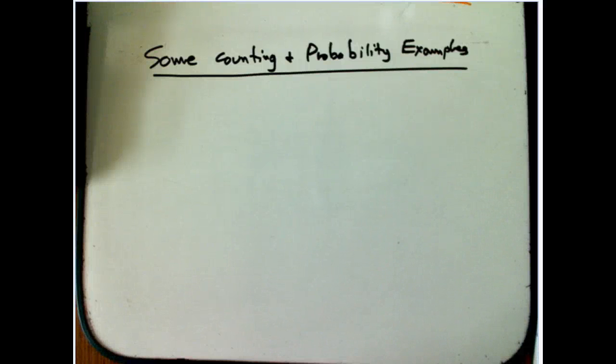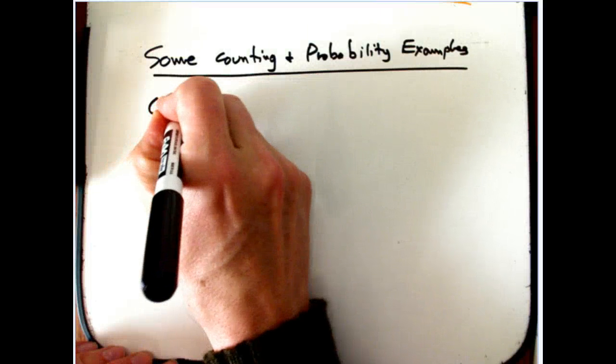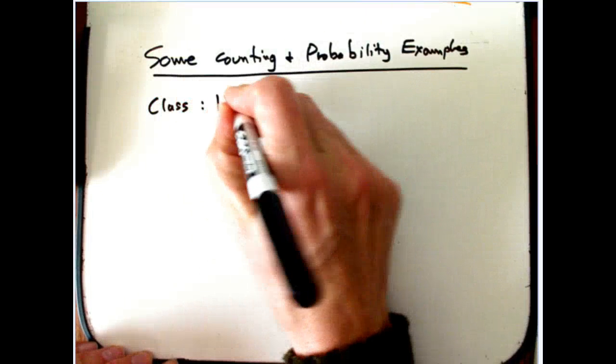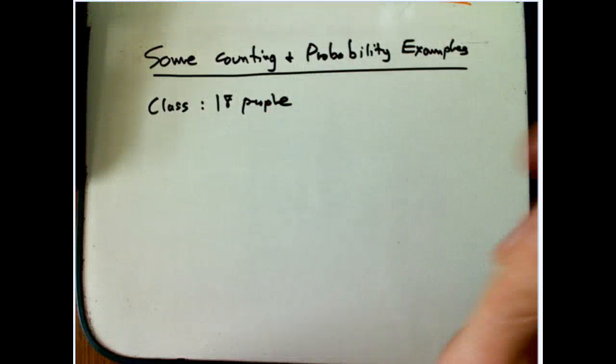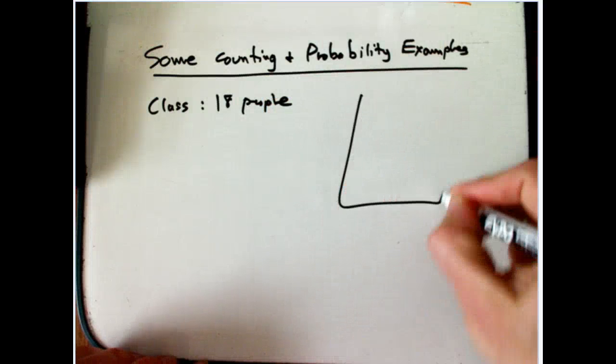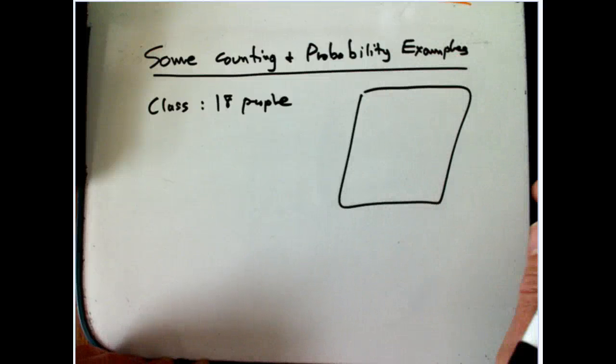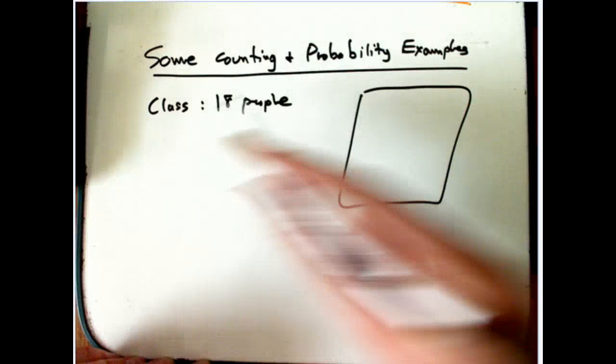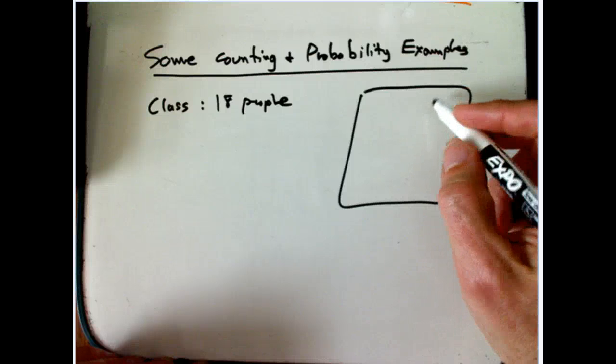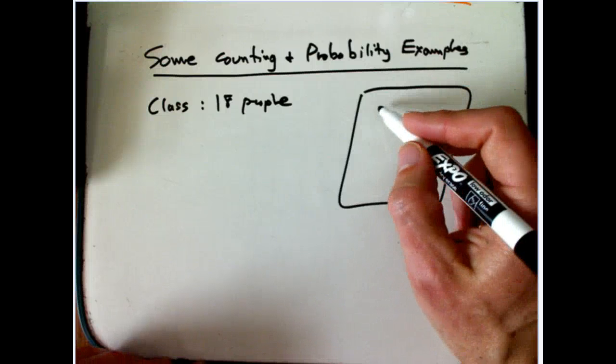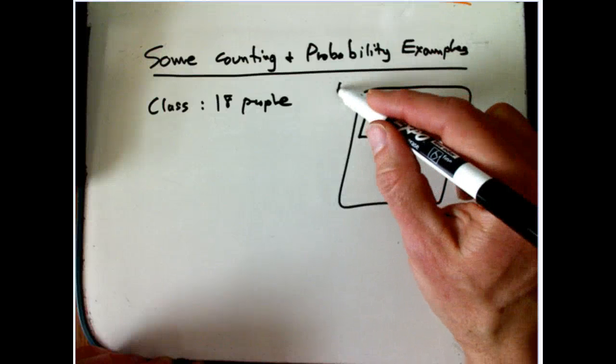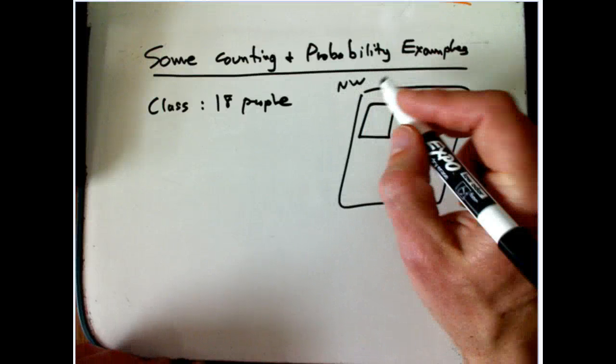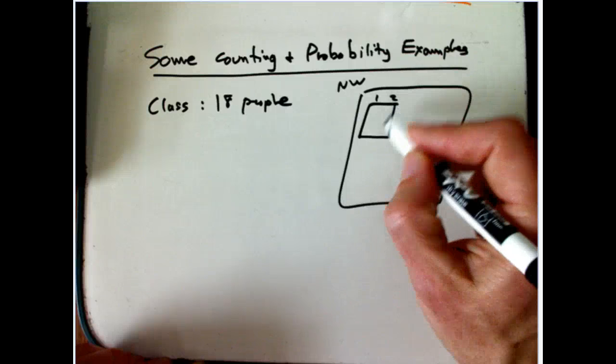Here's a few standard counting and probability examples. I've got a class of 18 people, and the way I run my classes are usually grouped into tables of 4, or at least some of them are 4. Obviously they're not all in 4 because it's not a multiple of 4, but let's say there's one table at the northwest corner of the room that's got 4 spots.